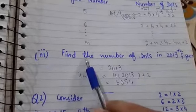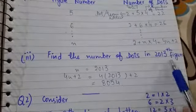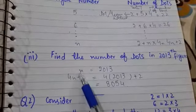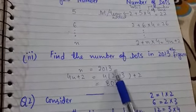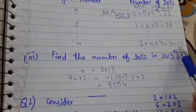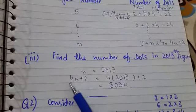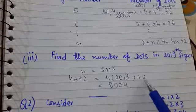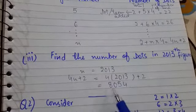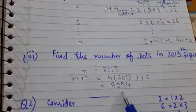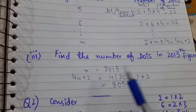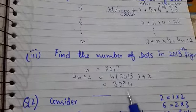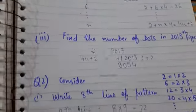The third part states: find the number of dots in the 2013th figure. Here n = 2013 and the general formula is 4n + 2. So 4 × 2013 + 2 = 8052 + 2 = 8054. This means figure 2013 will have 8054 dots.